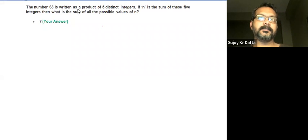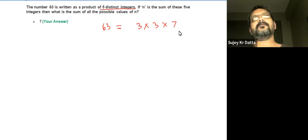In this question it says that 63 is written as a product of five distinct integers, so let's factorize it. 63 is 7×9, so 63 = 3×3×7. Obviously we've just used up three numbers.